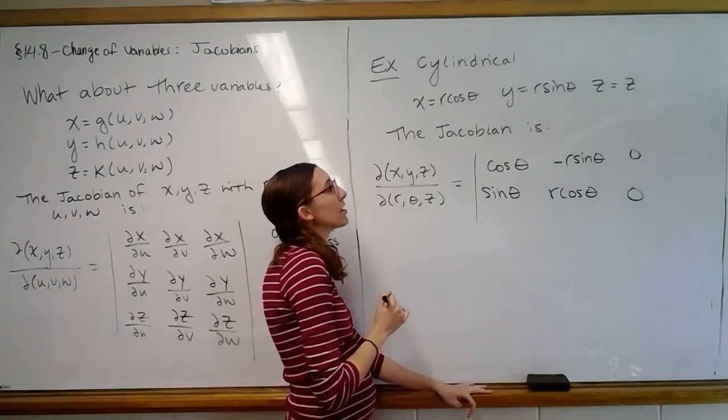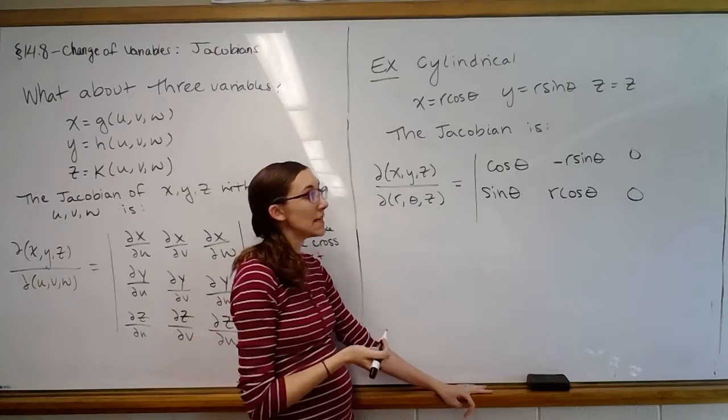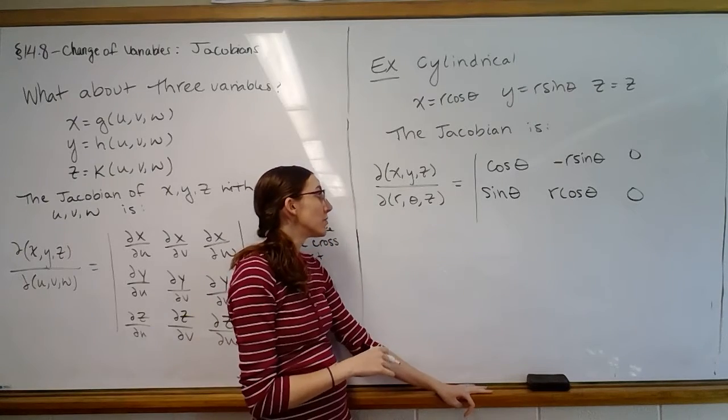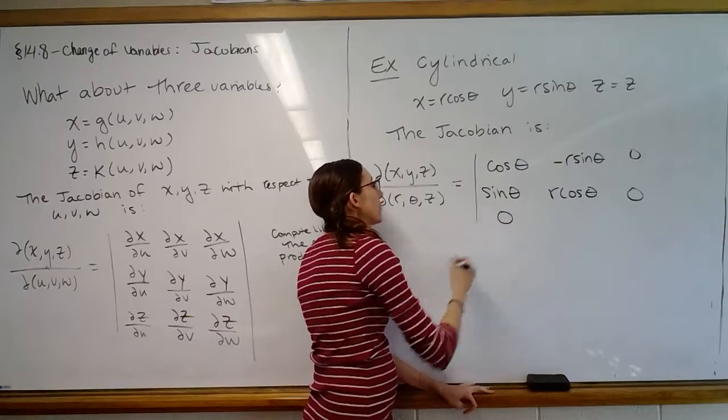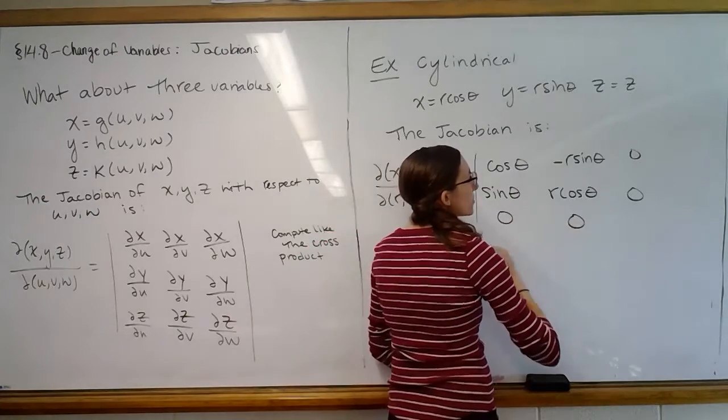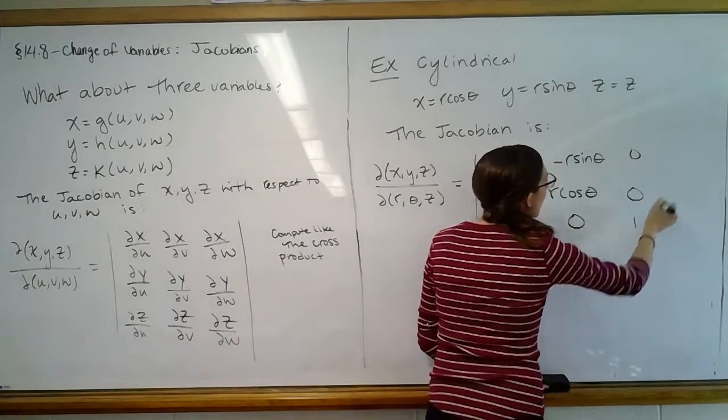And then taking a look at z, the function for z is z. So the derivative with respect to r is zero, and with respect to theta is zero, and with respect to z is one.